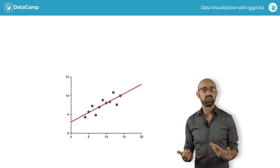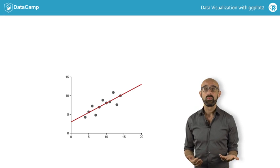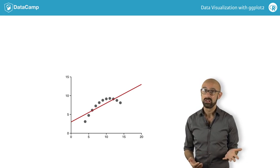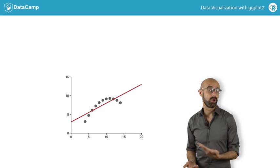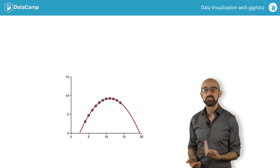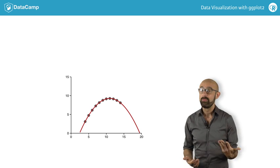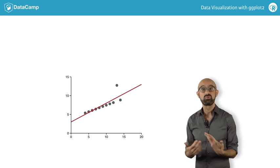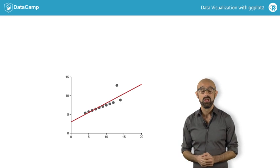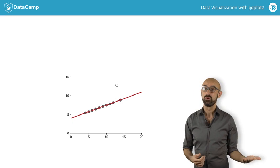However, the same model could be describing a very different dataset, for example, showing a parabolic relationship, where a different model would be much better suited to the data at hand. Or it may be describing data in which an extreme value has a large effect, which becomes clear when the outlier is removed.